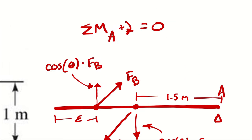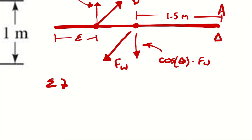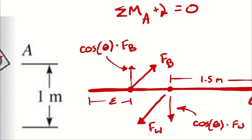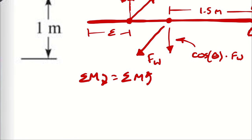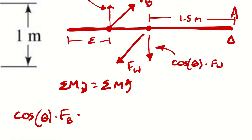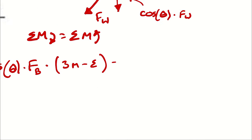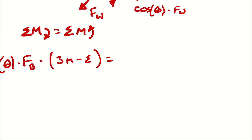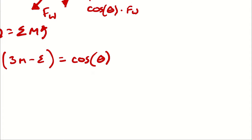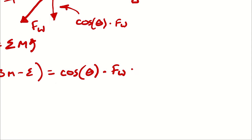Because the sum of moments must equal zero, I can say that the moments in the clockwise direction are going to equal the moments in the counter-clockwise direction. Clockwise here is going to be cosine of theta times Fb times the lever arm — so cosine of theta times the buoyant force times the lever arm, which I'm going to write as 3 meters minus epsilon — is equal to cosine of theta times Fw times 1.5 meters.